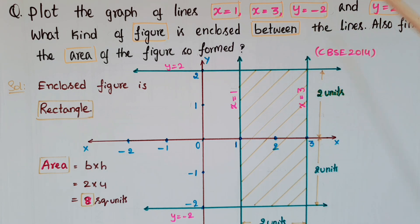First, draw x=1, that is 1 unit parallel to the y-axis, right of the y-axis. And x=3 is 3 units right of the y-axis and parallel to the y-axis. So first draw these two lines.